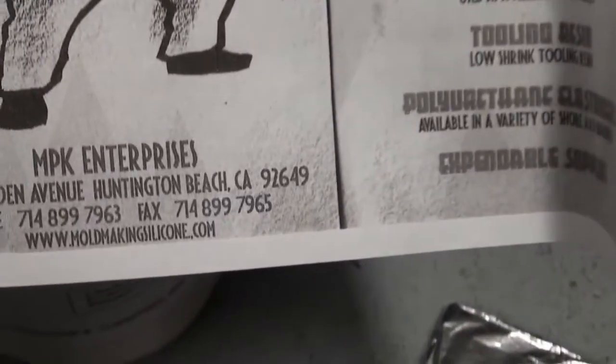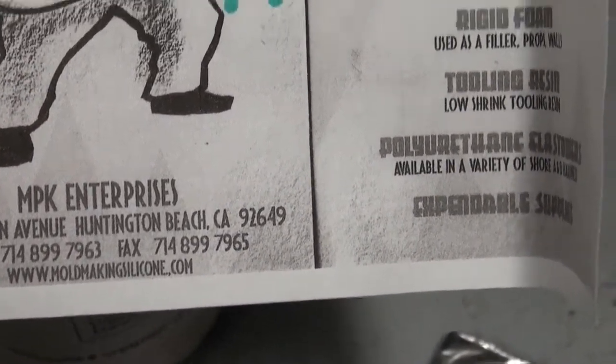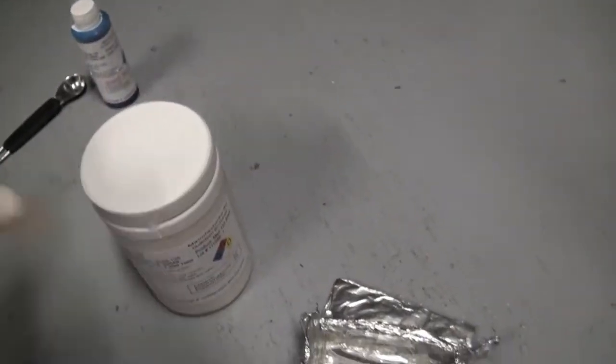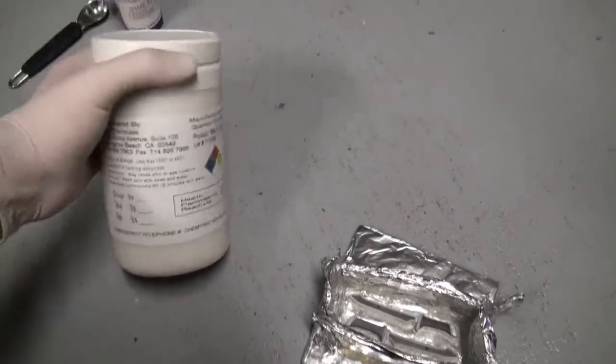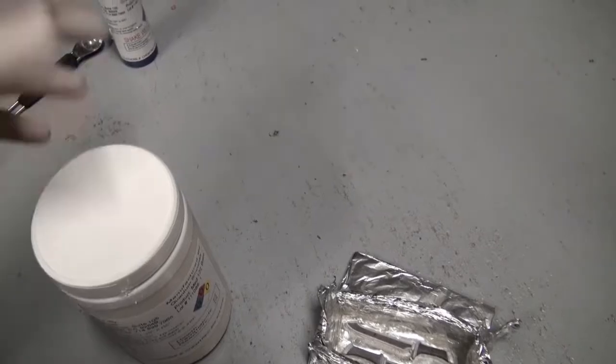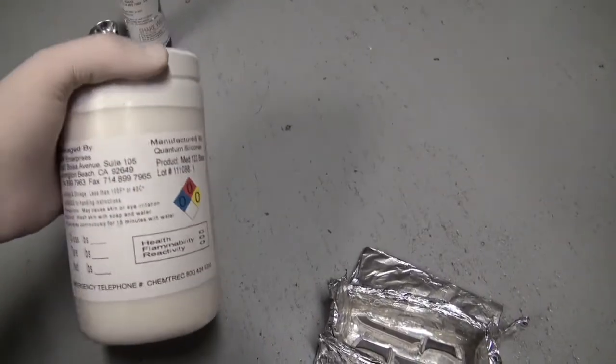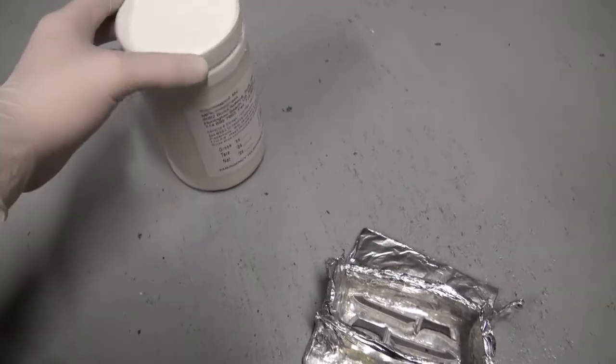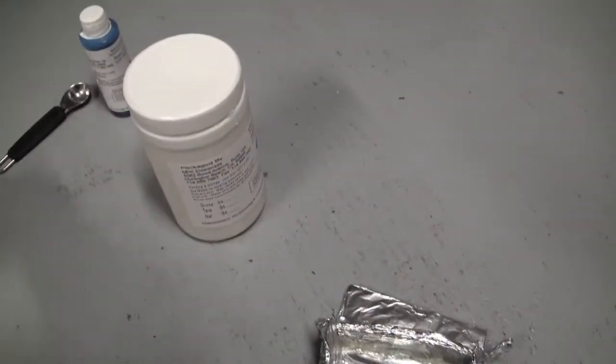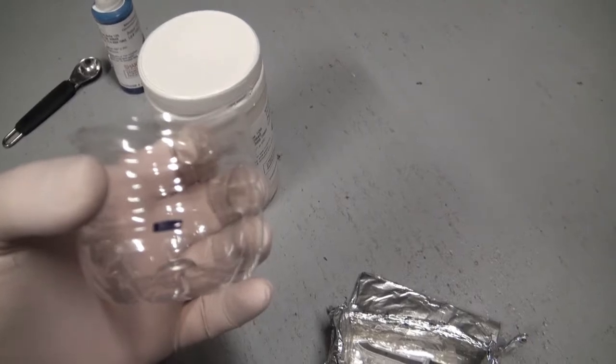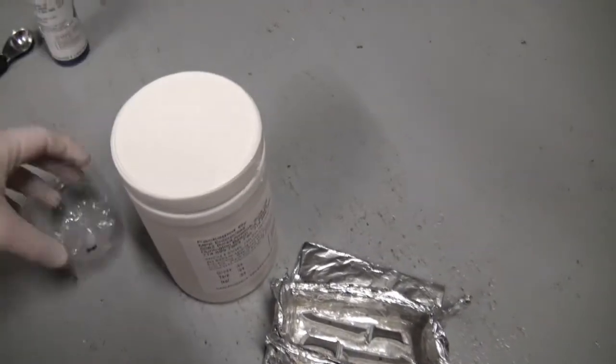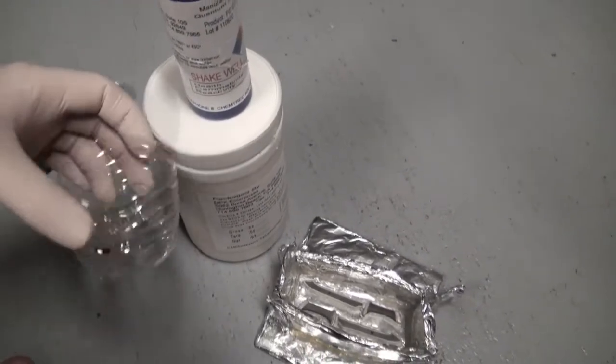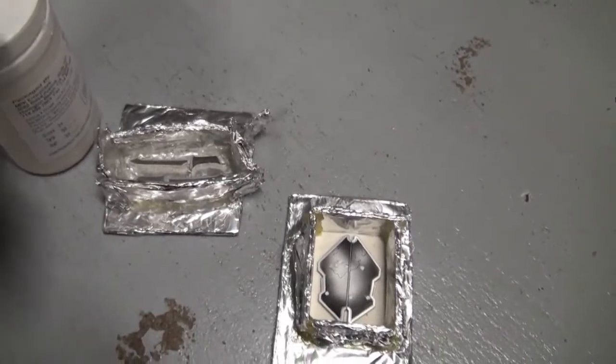And it's cheaper than Smooth-On. I got this from www.moldmakingsilicone.com. It's California based. I'm in Arizona so it got here really fast, got here in like two days. This is about a four pound kit and it was like $47. Where Smooth-On's one pound kit was I think like $37. Would have been more expensive and I would have got less quantity with Smooth-On. And this has the same specs as all the Smooth-On stuff. I pre-measured 10 tablespoons for the white mixture and then the blue catalyst is just going to be one tablespoon.